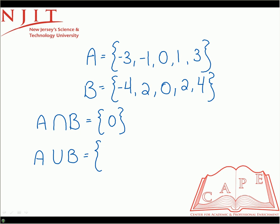Then we go to -3, -1, 0 (only list zero once), then 1, 2, 3, and 4. That would be the union of A and B.